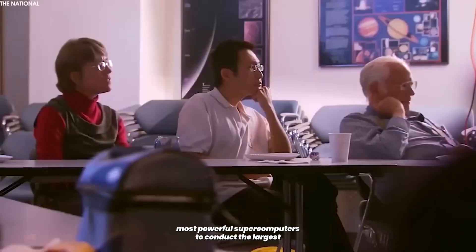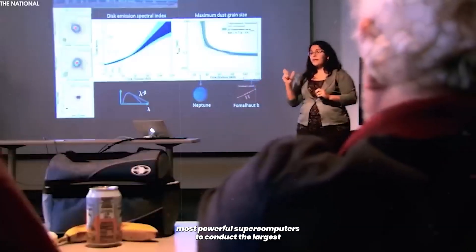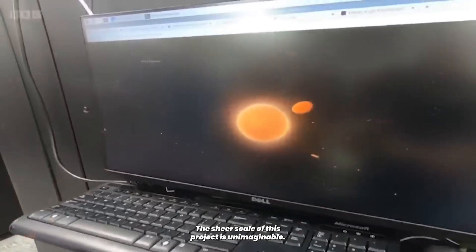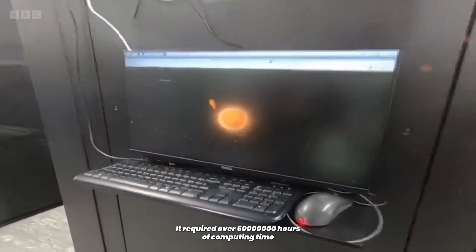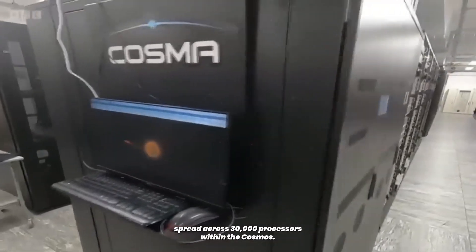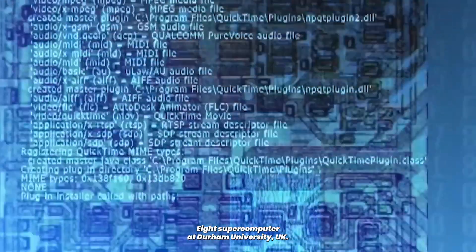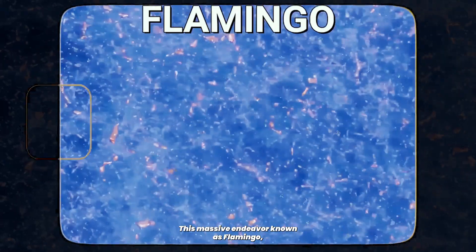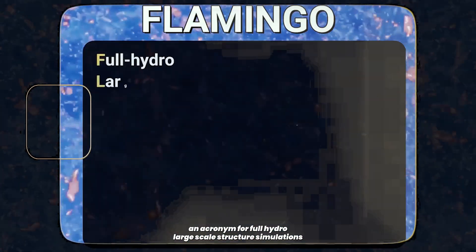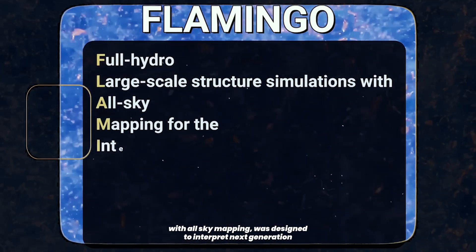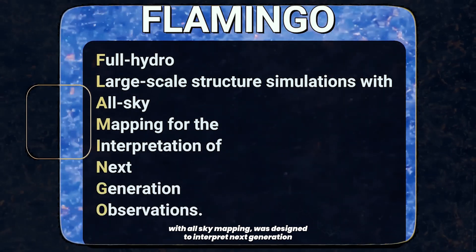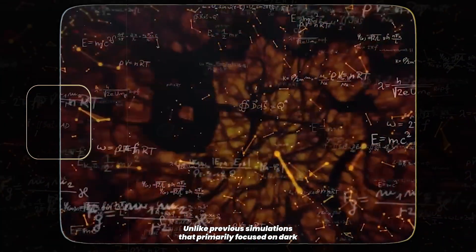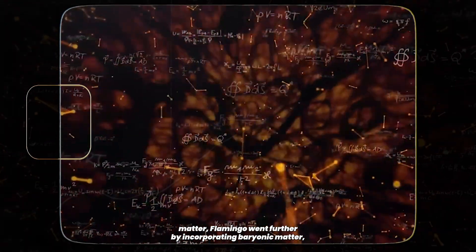To uncover the mystery, astronomers turn to one of the world's most powerful supercomputers to conduct the largest cosmological simulations ever attempted. The sheer scale of this project is unimaginable. It required over 50 million hours of computing time, spread across 30,000 processors within the DRAC-Cosma 8 supercomputer at Durham University, UK. This massive endeavor, known as FLAMINGO, an acronym for Full Hydro Large Scale Structure Simulations with All-Sky Mapping, was designed to interpret next-generation cosmic observations.